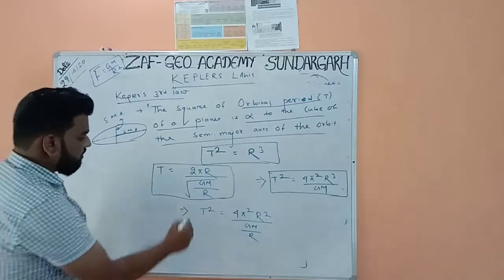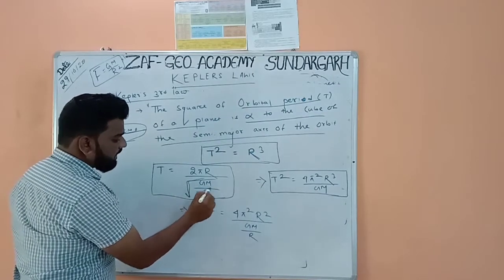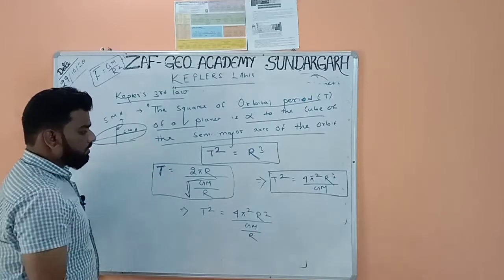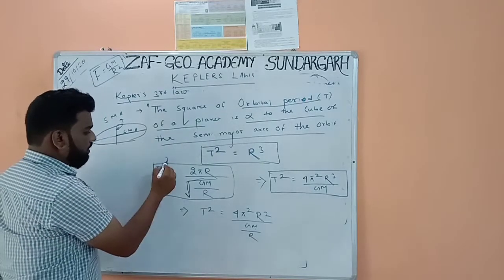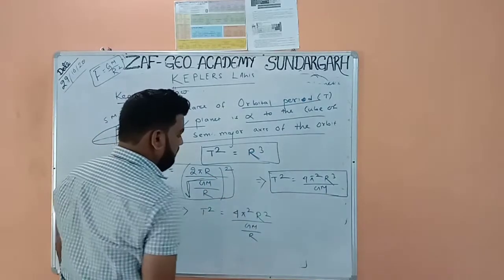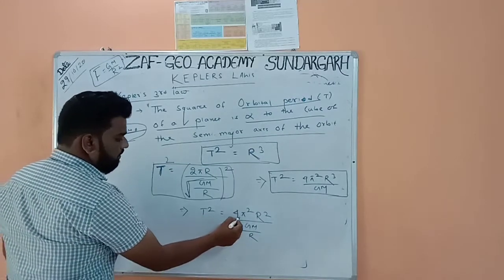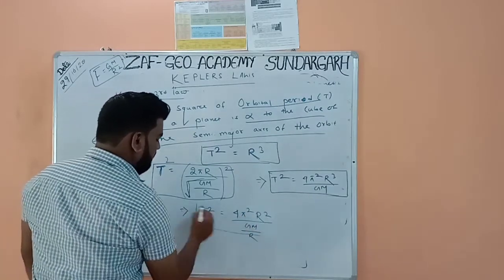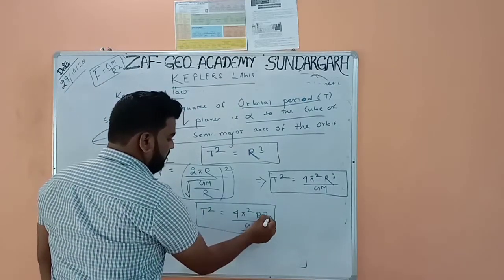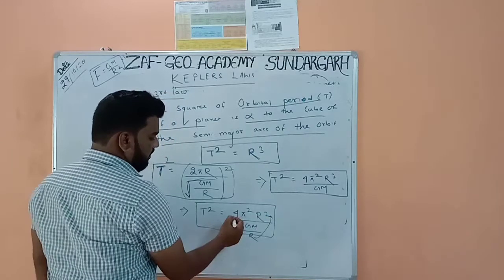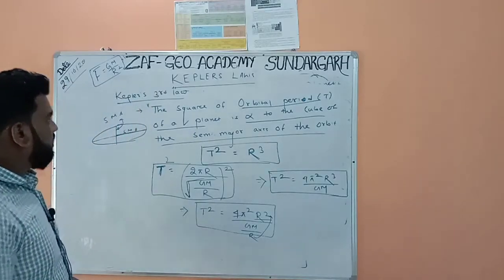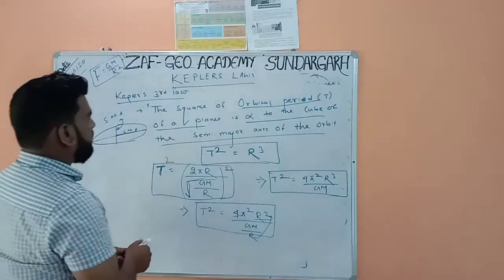The formula for orbital period T is: T = 2πr / √(G·M/r). Squaring both sides, T² = 4π²r² / (G·M/r). Moving r upward gives T² = 4π²r³ / (G·M). This confirms T² is proportional to r³, proving Kepler's third law.